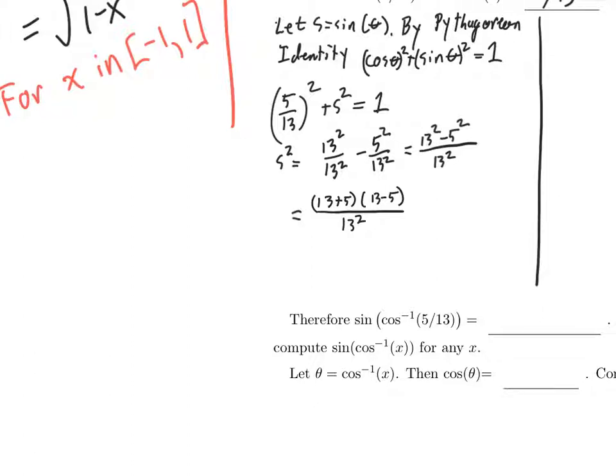So let's try to write that out. 13 plus 5 is 18 times 13 minus 5, that's 8, over 13 squared.